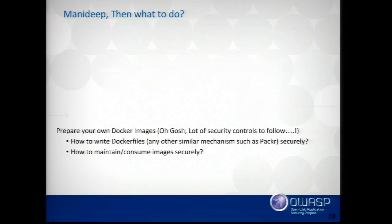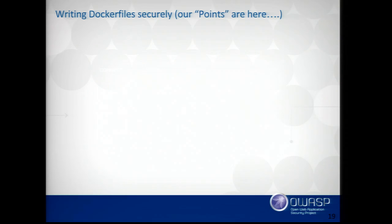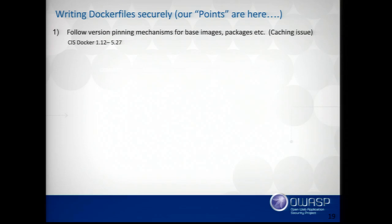So this is the problem — what is the solution? You can make your own Docker images in a secure way and host them at your enterprise. There are two things to concentrate under this segment: first, how to write the Dockerfile securely; second, after building images, other security constraints to maintain images securely. The Docker file-to-image-to-container flow means you have to start taking care of security at the Dockerfile itself.